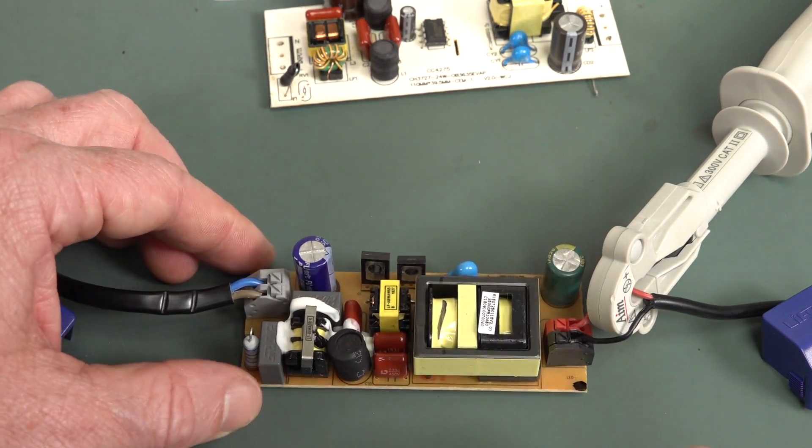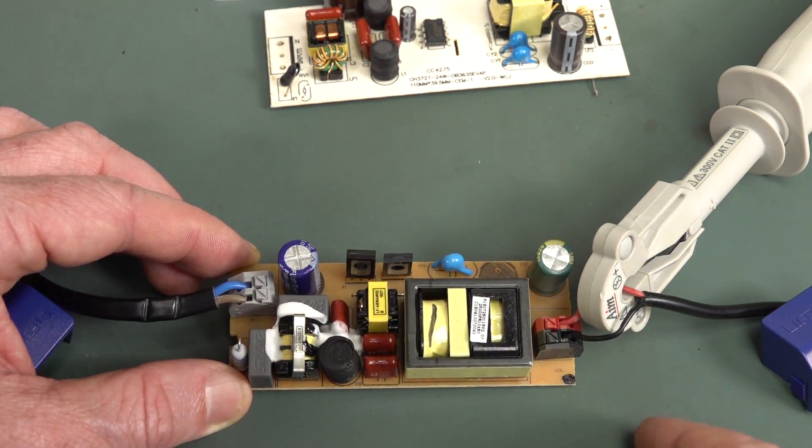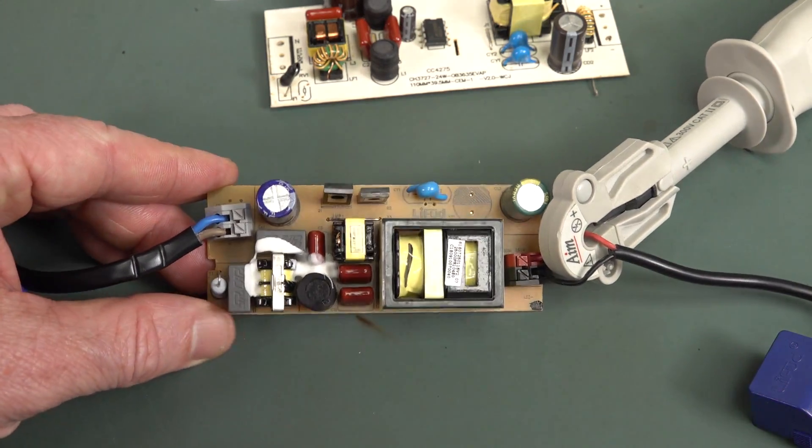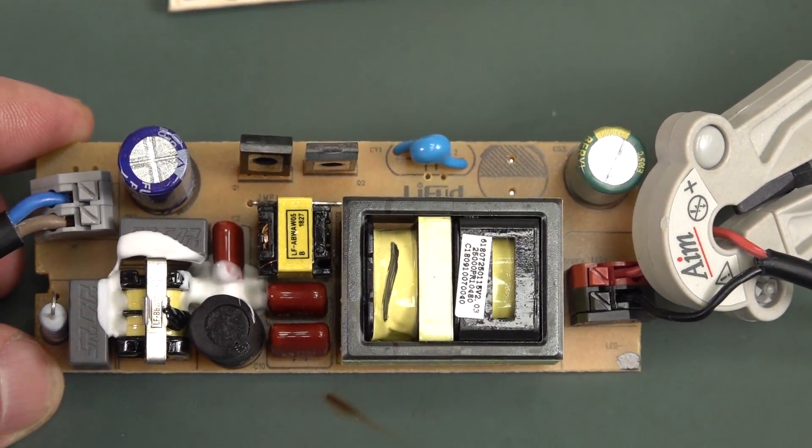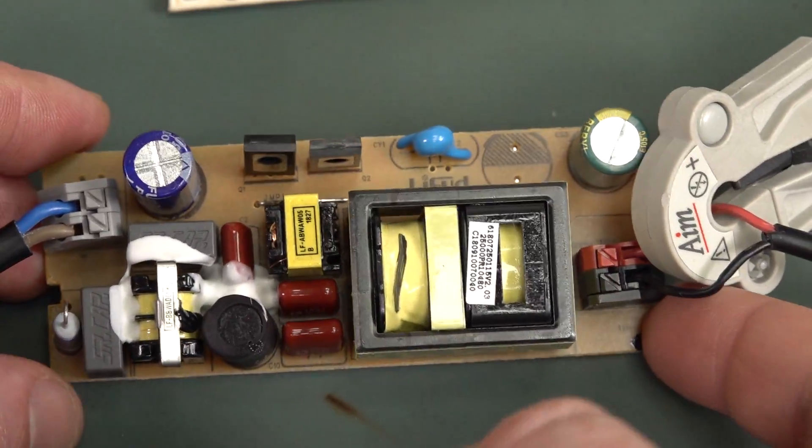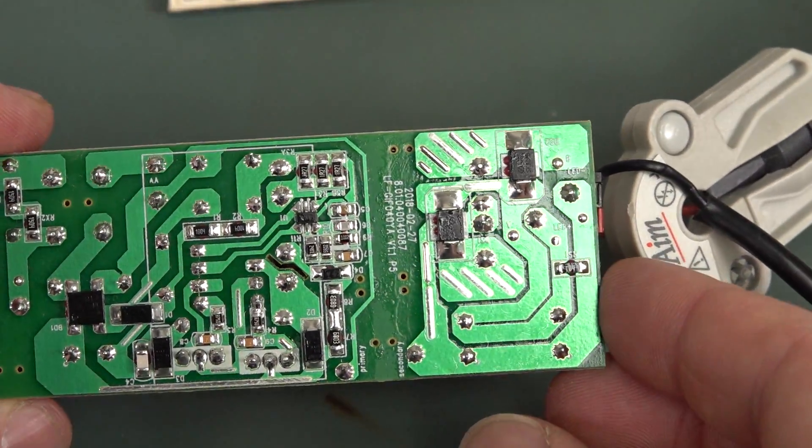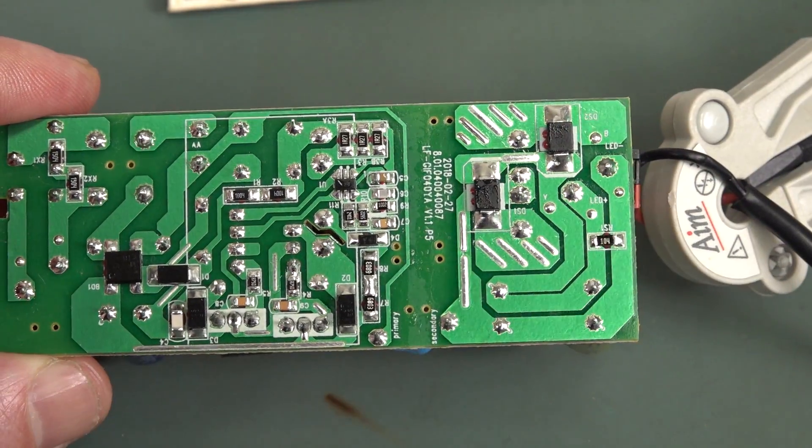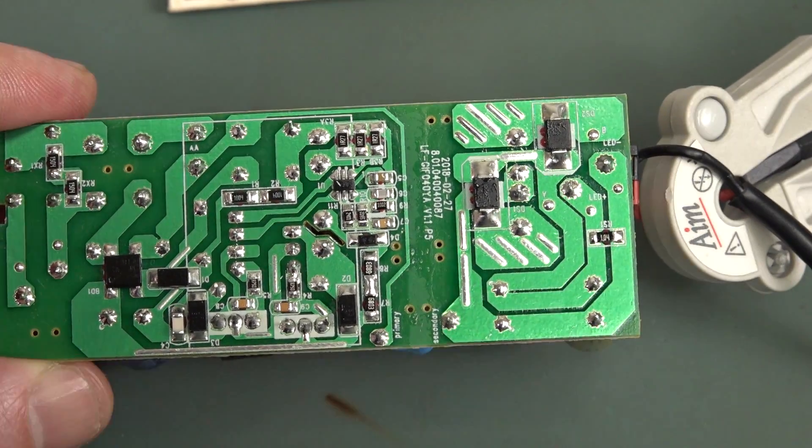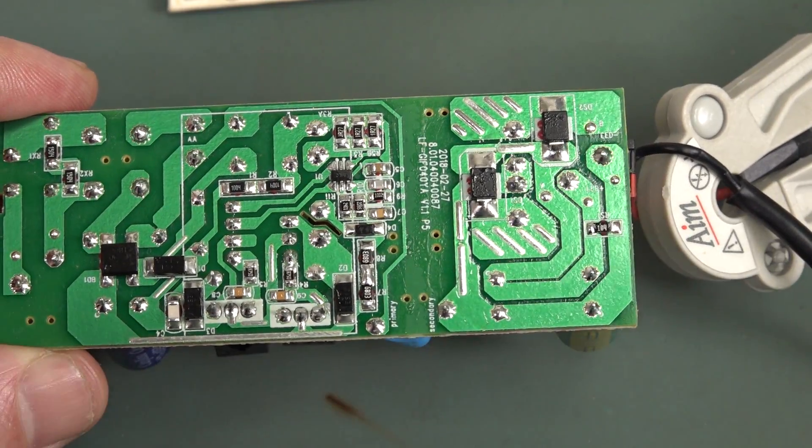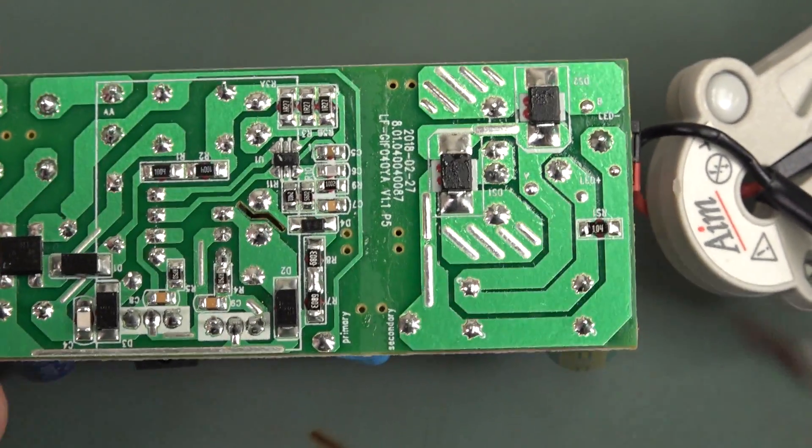I expected this one to be a two-stage and have output regulation as well. But you can see that on the secondary side here, there's not much. We've got an output cap. And on the bottom side, there's even less. We've got ourselves some diodes there, and that's it.